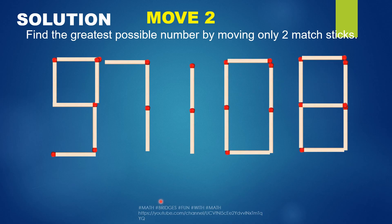7. That's it. So the greatest possible number by moving only 2 matchsticks in this is 97108.